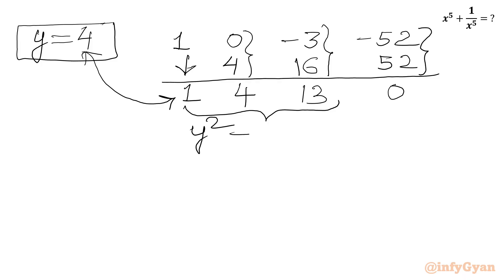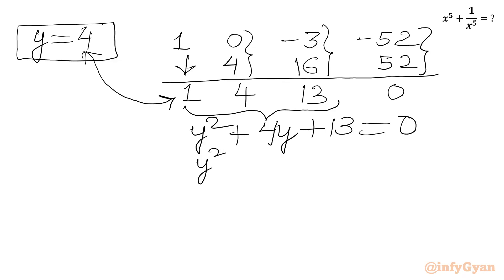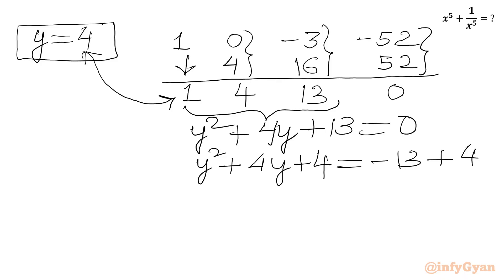We now have the quadratic y squared minus 4y plus 13 equal to 0. We can check the discriminant, or use completing the square. Let us use completing the square: y squared minus 4y equal to negative 13. We add 4 to both sides, so in the LHS we can write this as y minus 2 whole square.